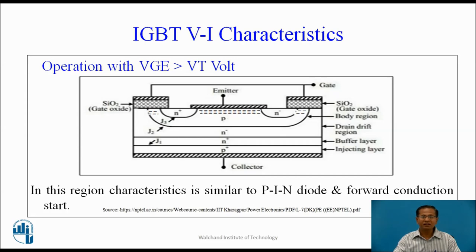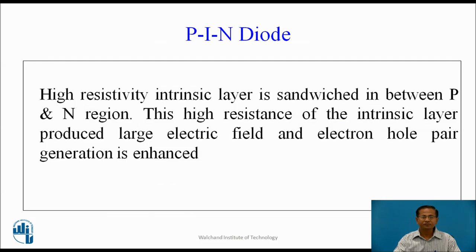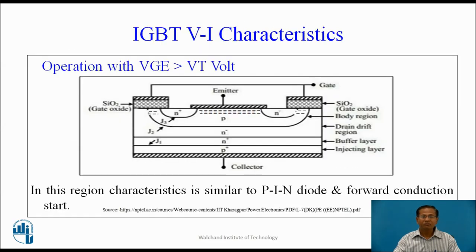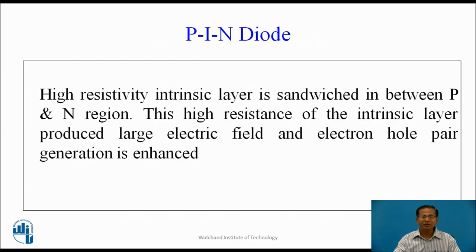As long as VGE is less than VT, the device remains off. When VGE crosses the threshold voltage, the P region loses its identity and the device behaves as a PIN diode — a high-resistivity intrinsic layer sandwiched between P and N regions. This high resistance of the intrinsic layer produces a large electric field and enhances electron-hole pair generation.